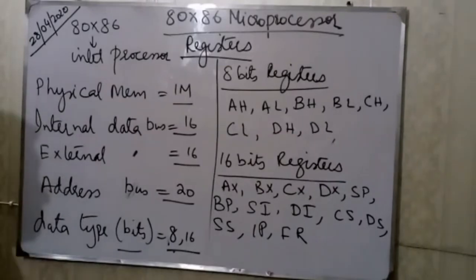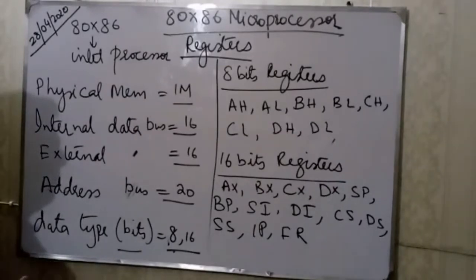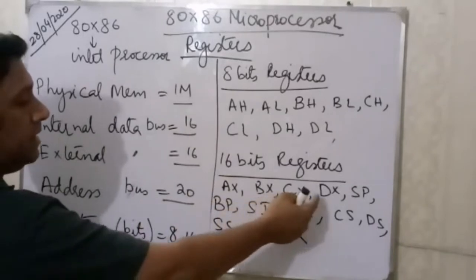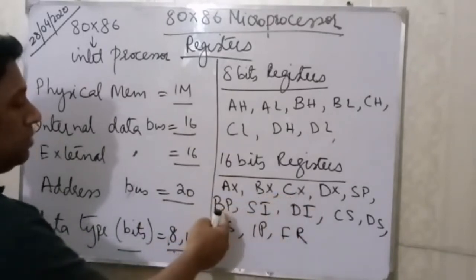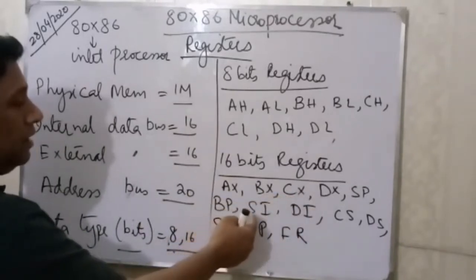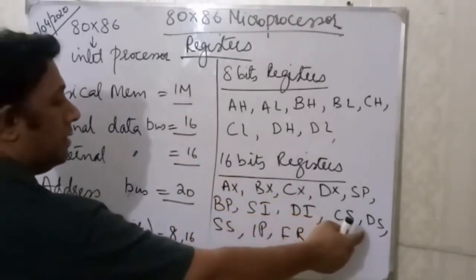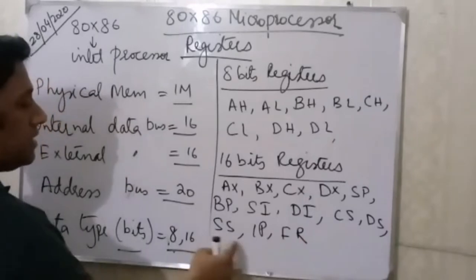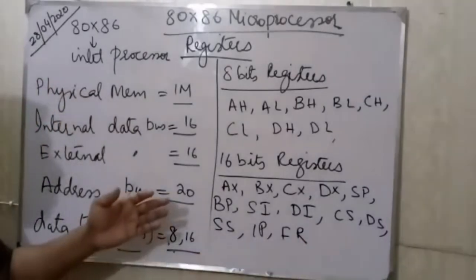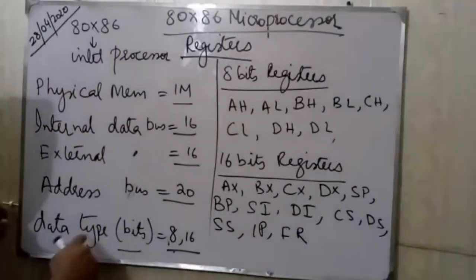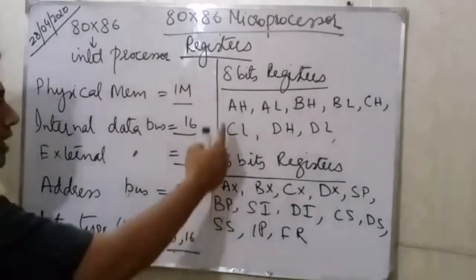Now for the 16-bit registers: AX, BX, CX, DX, SP, BP, SI, DI, CS, DS, SS, IP, FR. These are all the 16-bit registers. The data types are actually regarding these registers — 8 or 16 bits.